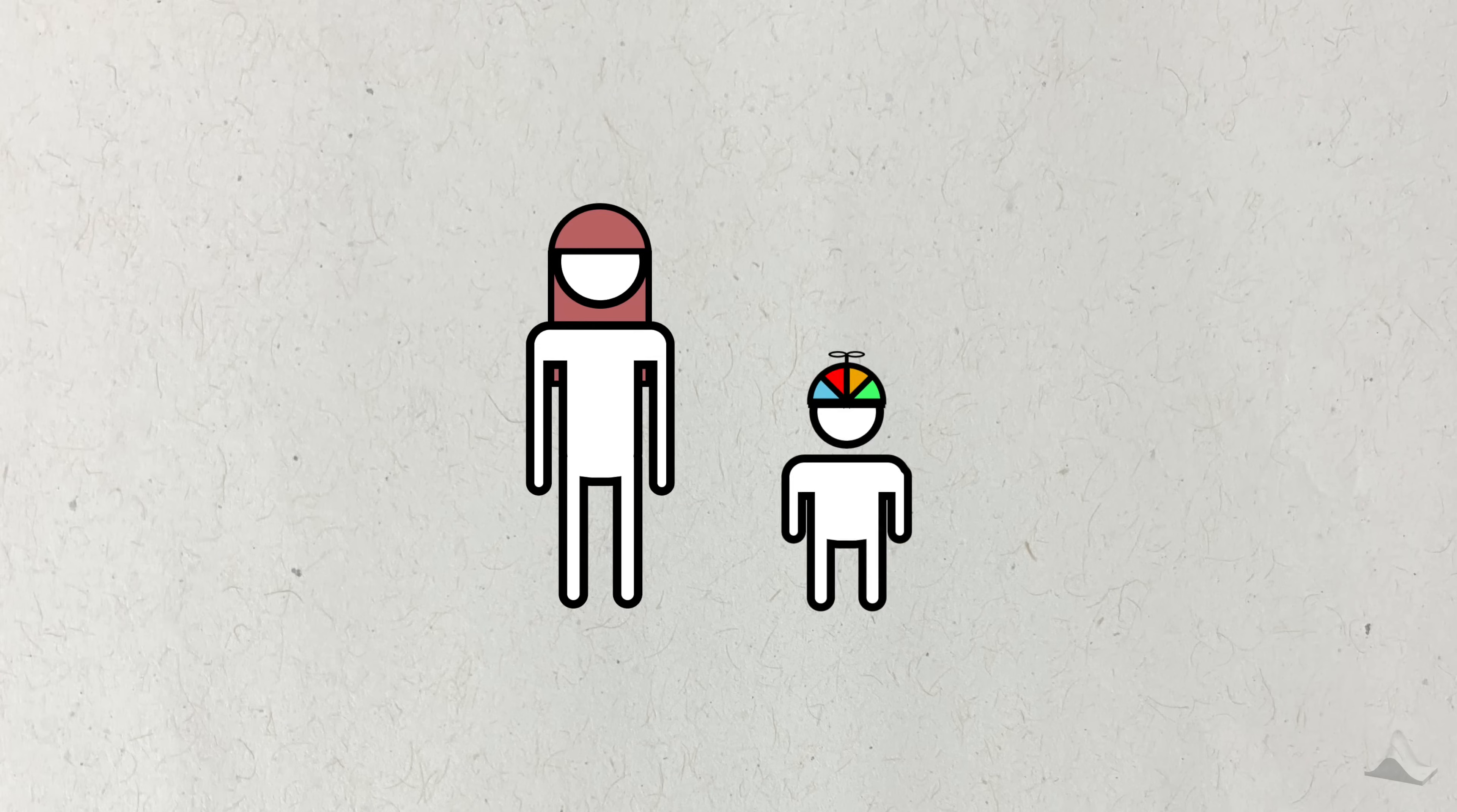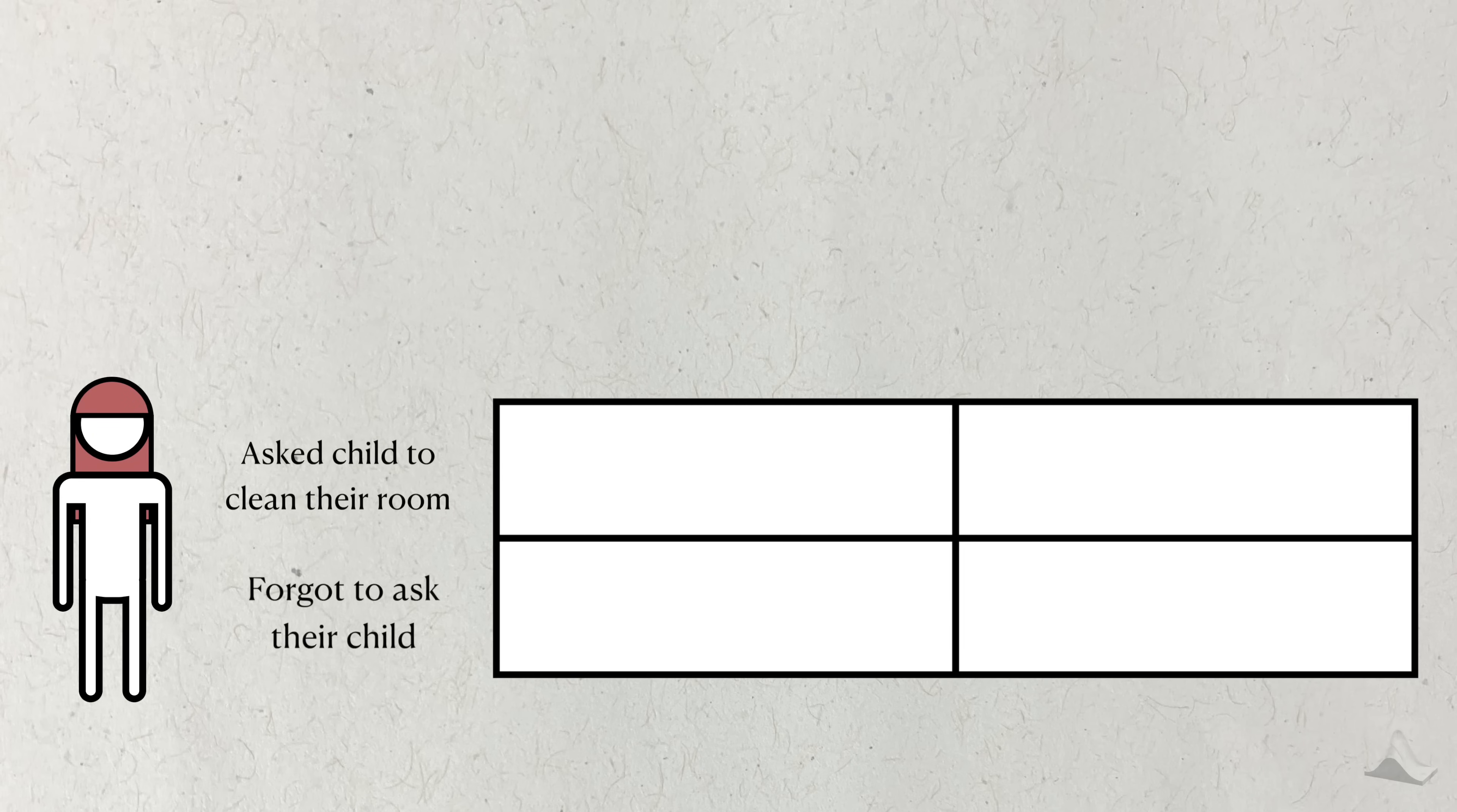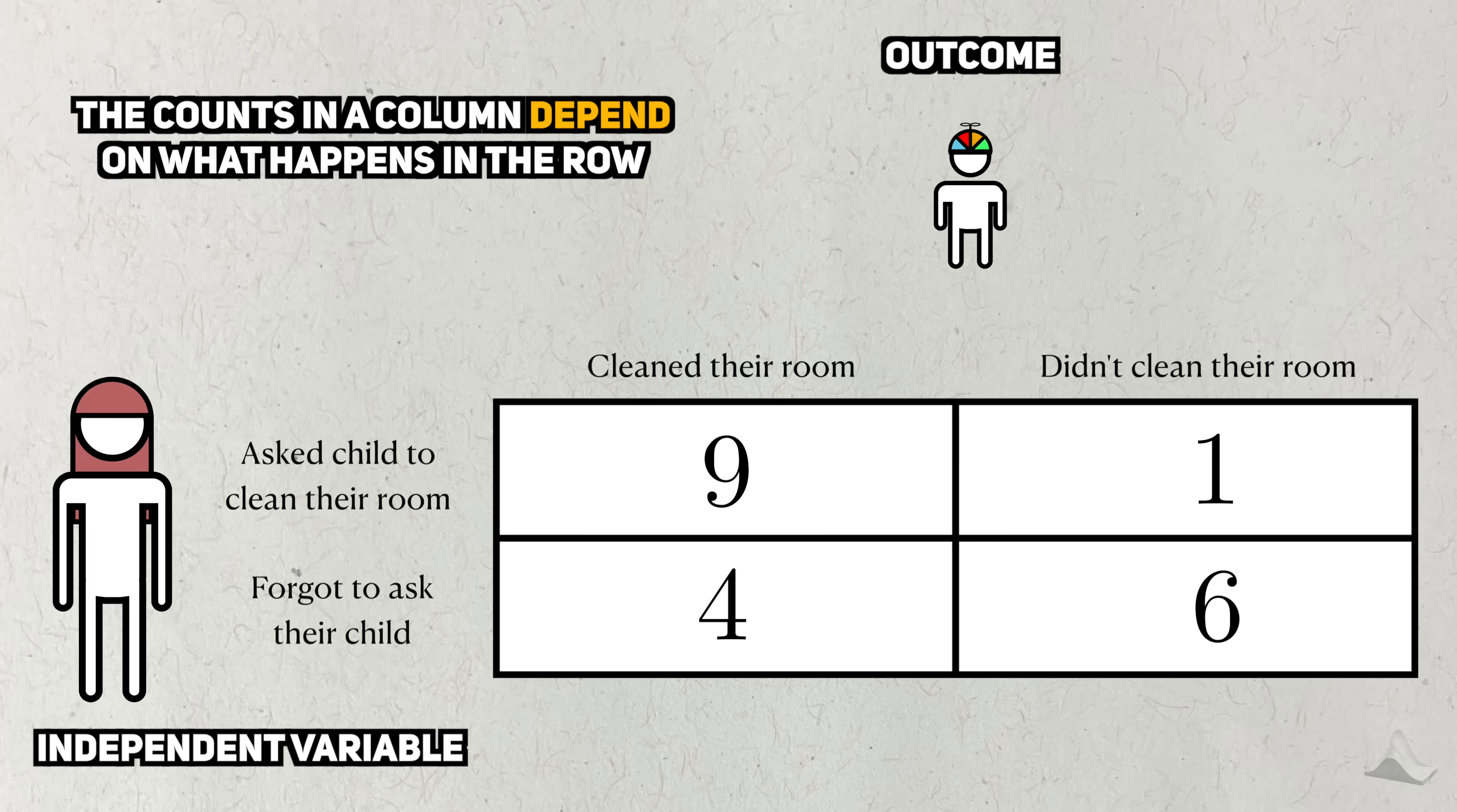The example I ended up with involved a parent and the child. I thought of a situation where a parent will ask their kid to clean their room. Some days they'll remember to ask, and sometimes they'll forget. This was my independent variable, or my row. The outcome was whether or not the kid actually cleaned their room, my column. If the kid listened to their parent, then the number of times that they cleaned their room when they were asked should be noticeably different than when they weren't. To me, there was a clear dependence here between the row and the column.